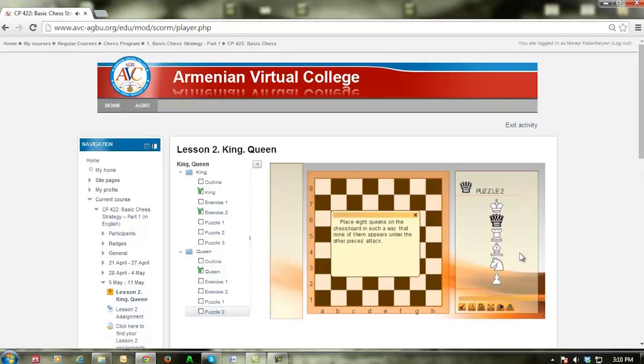Place 8 queens on the chess board in such a way that none of them appears under the other pieces attack.